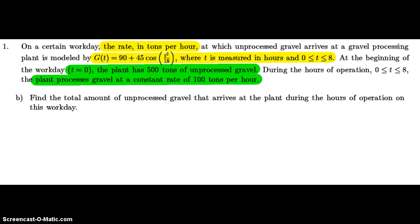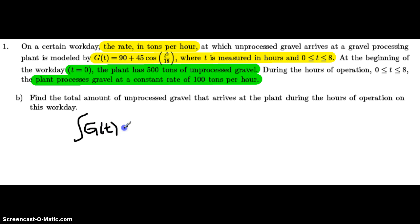Part b: find the total amount of unprocessed gravel that arrives at the plant during the hours of operation on this workday. The total amount of unprocessed gravel that arrives is going to be in tons. As we've already seen, tons is the integral of g of t. So we're going to take the integral of g of t dt over the interval from 0 to 8.